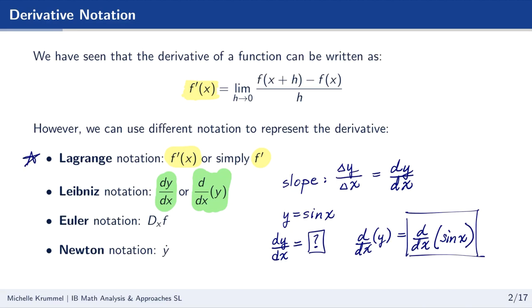Euler's notation and Newton's notation I'm not going to be using in this course, but if you are looking at other websites or math textbooks, you might encounter them. Euler's notation uses a capital D for the derivative, F is the name of the function, and the little subscript x indicates we're taking the derivative with respect to x. Newton's notation is a y with a little dot on top of it, which also indicates the derivative — a really nice easy notation.